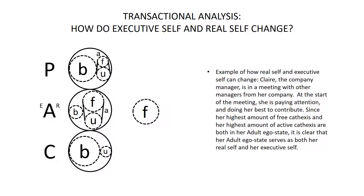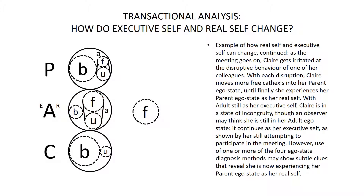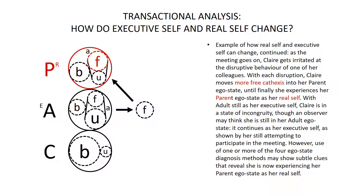For an example of this, we can return to Claire, who is in a meeting with other managers from her company. At the start of the meeting, she is paying attention and doing her best to contribute. Since her highest amount of free cathexis and her highest amount of active cathexis are both in her adult ego state, her adult ego state serves as both her real self and her executive self. As the meeting goes on, however, Claire starts to get irritated at the behavior of one of her colleagues who is clearly trying to disrupt the meeting. With each disruptive act, Claire moves more free energy into her parent ego state, until finally she experiences her parent ego state as her real self. With parent as her real self but adult still as her executive self, Claire is in a state of incongruity, though anyone observing her might think, at first glance, she is still in her adult ego state.